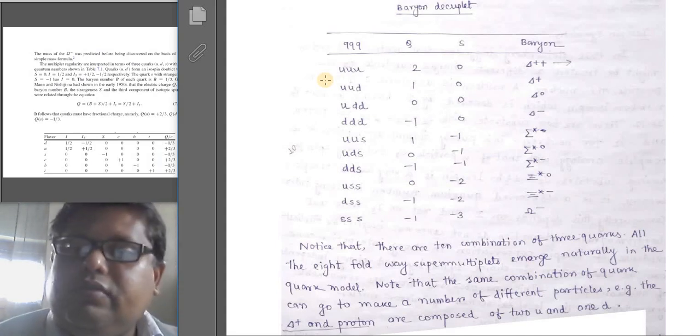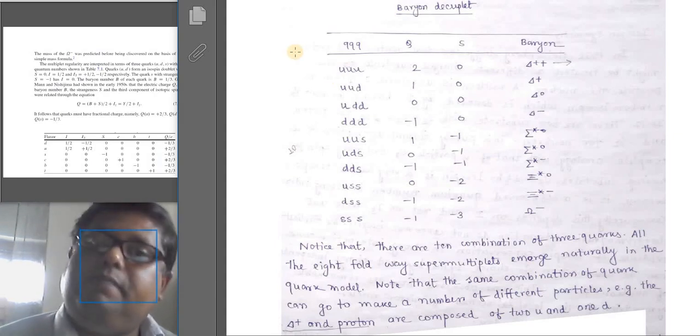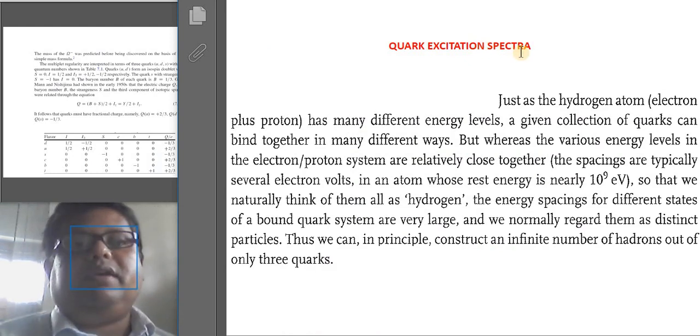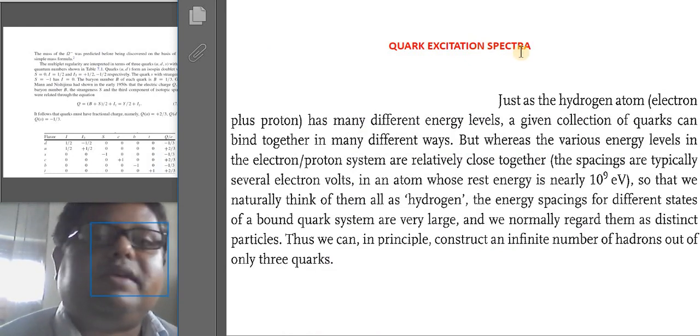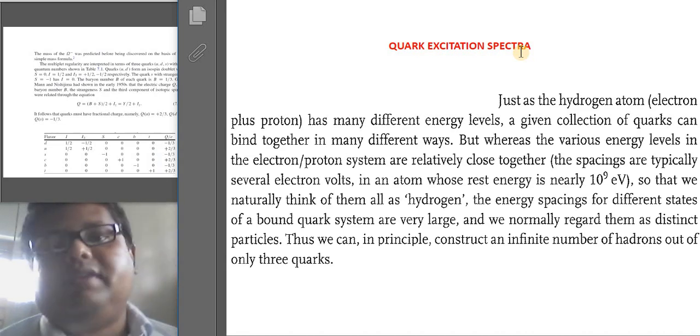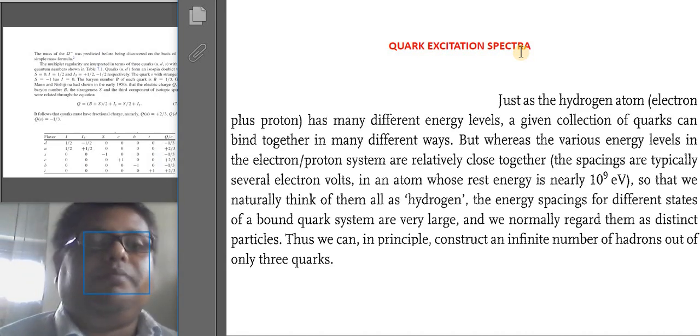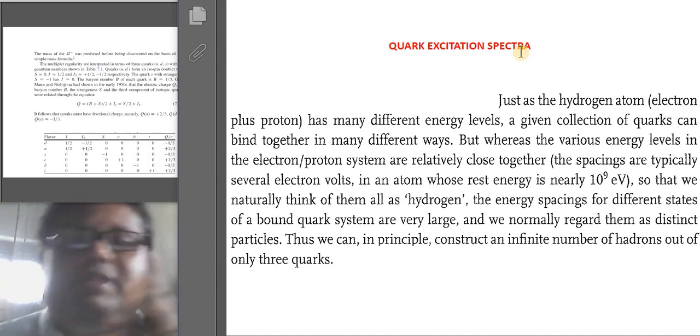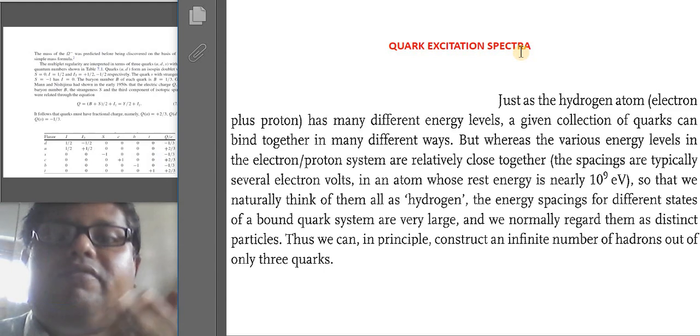The explanation lies in this quark model like this. Just as the hydrogen atom, which has an electron and a proton, has many different levels, a given collection of quarks can bind together in many different ways. But whereas the various energy levels in the electron-proton systems are relatively close together, the spacings are typically several electron volts in an atom whose rest mass is of the order of 10 to the power 9 eV.